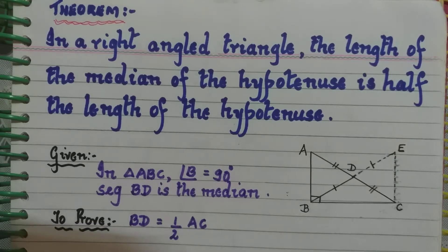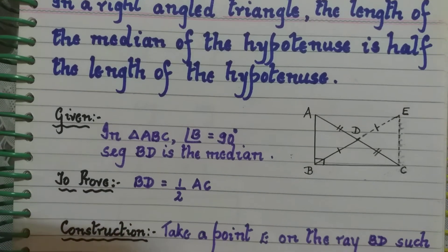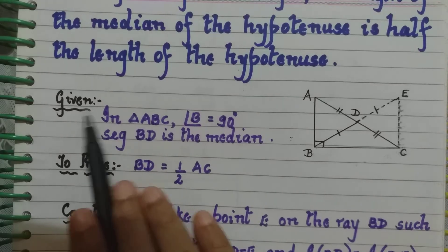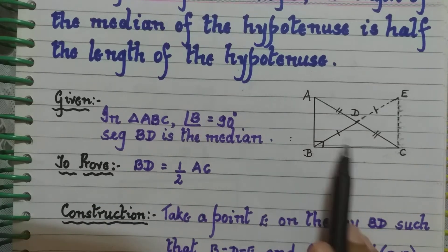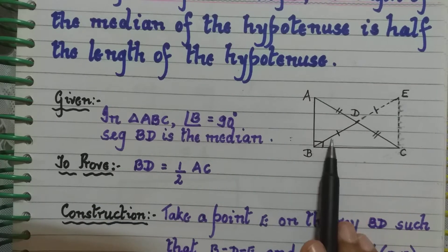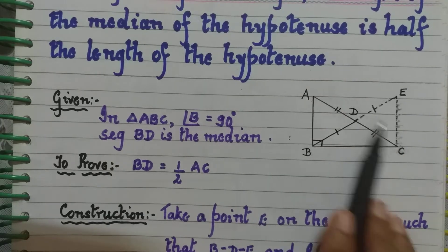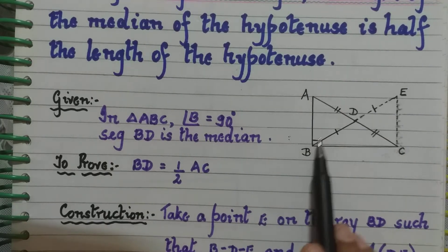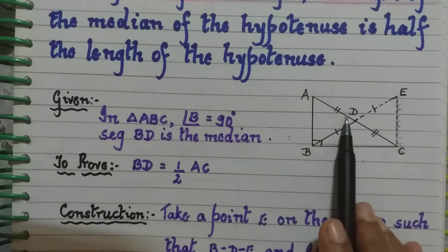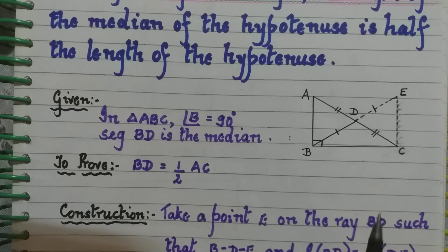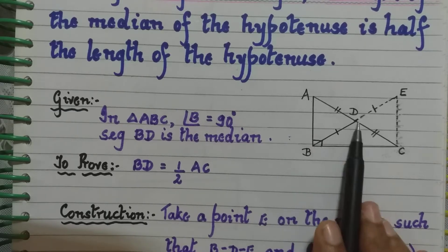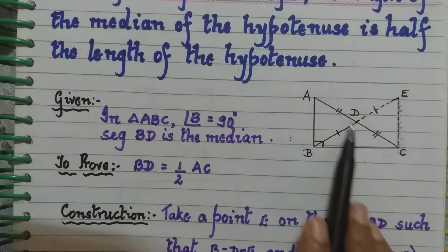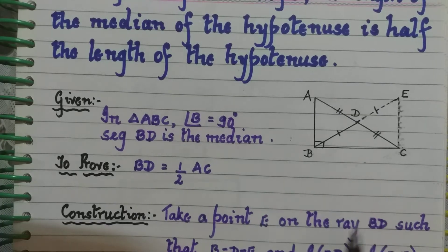Let us see what is given. In triangle ABC, angle B is 90 degrees, so it is a right angled triangle. Segment BD is the median. What are we to prove? BD is half of AC. What is the construction?